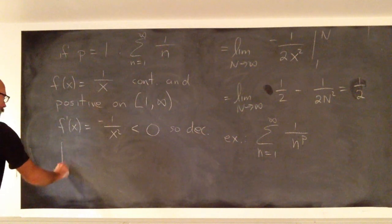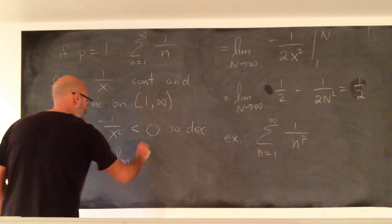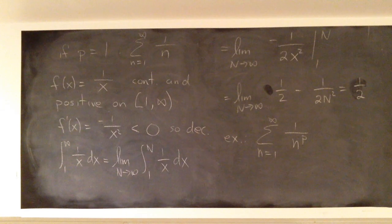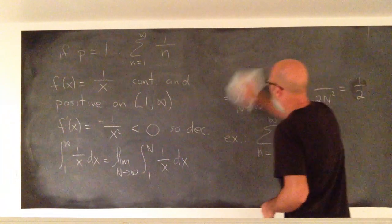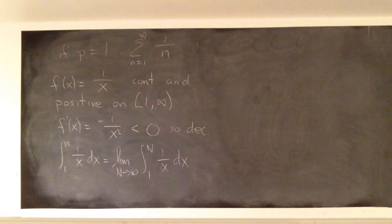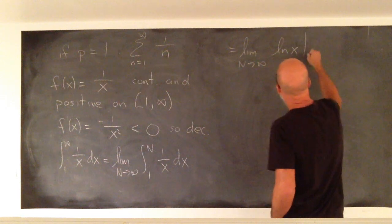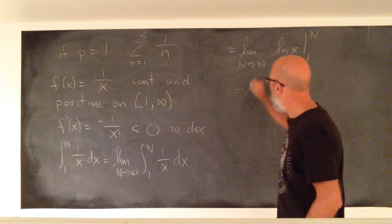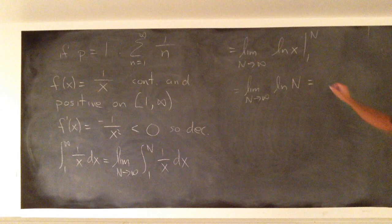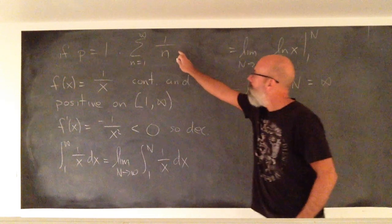We can apply the integral test. The integral from 1 to infinity is an improper integral — it's the limit as n goes to infinity. The antiderivative in this case is ln, so this is just ln(n), whose limit is infinity. As n goes to infinity, ln(n) is infinity. So the integral diverges, and consequently the series diverges.